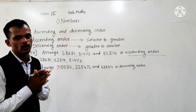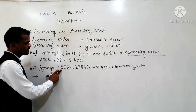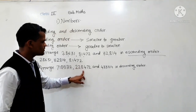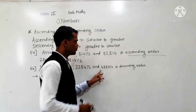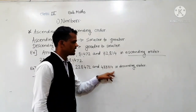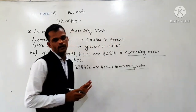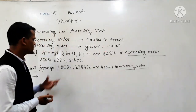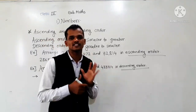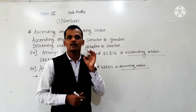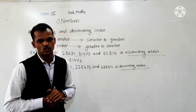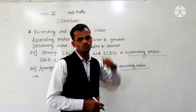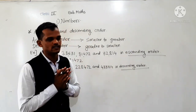Now we will see the descending order. We will arrange 7,18,532, 2,28,472 and 4,33,814 in descending order. Descending order means big to small. You can observe that all these numbers are 6-digit numbers. So we will compare the lakh place digit, and we have to arrange from big to small, so first find the biggest number.